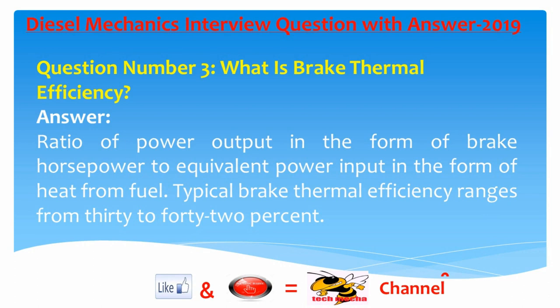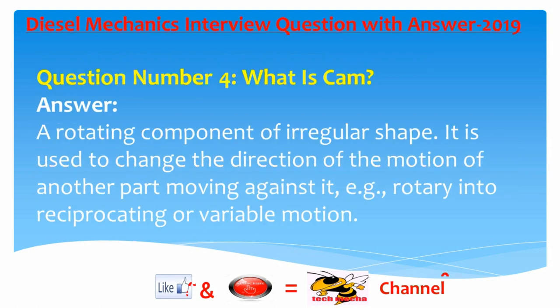Question number three: What is brake thermal efficiency? Answer: The ratio of power output in the form of brake horsepower to equivalent power input in the form of heat from fuel. Typical brake thermal efficiency ranges from 30 to 42 percent.